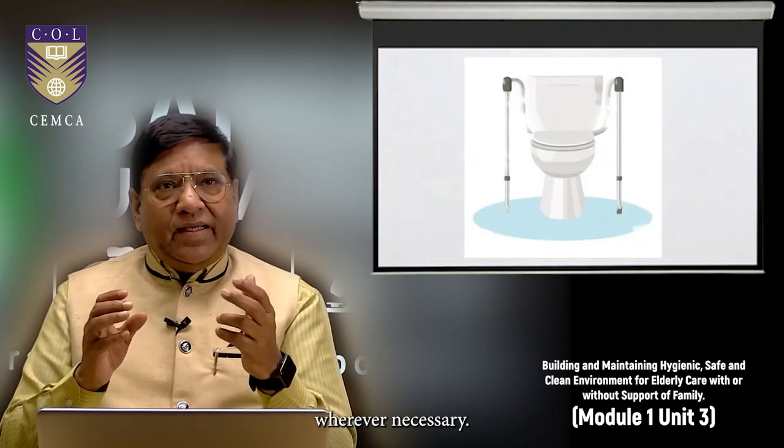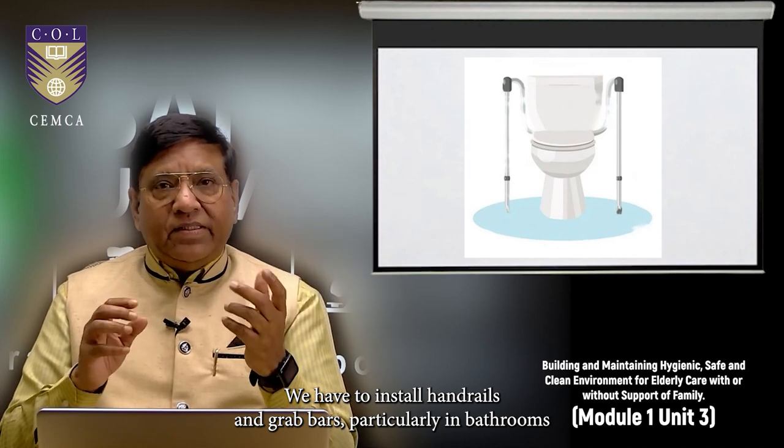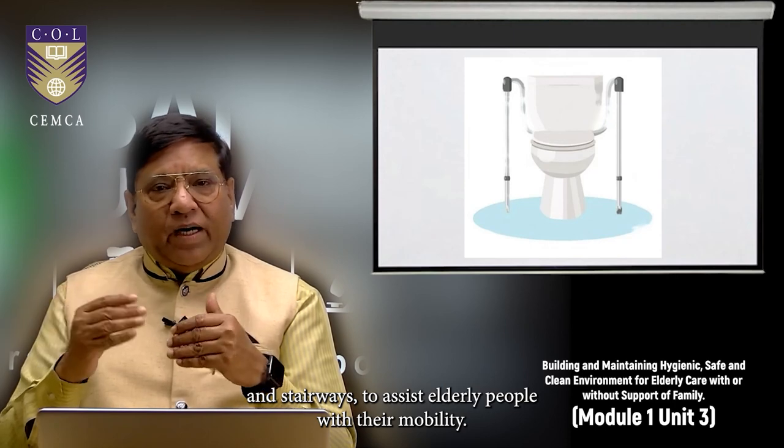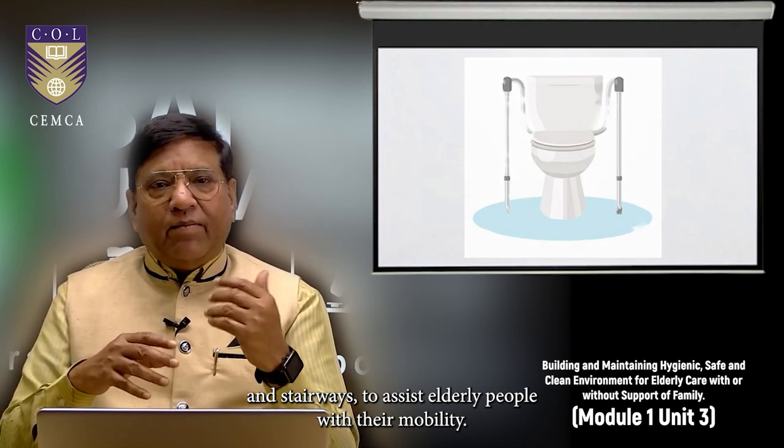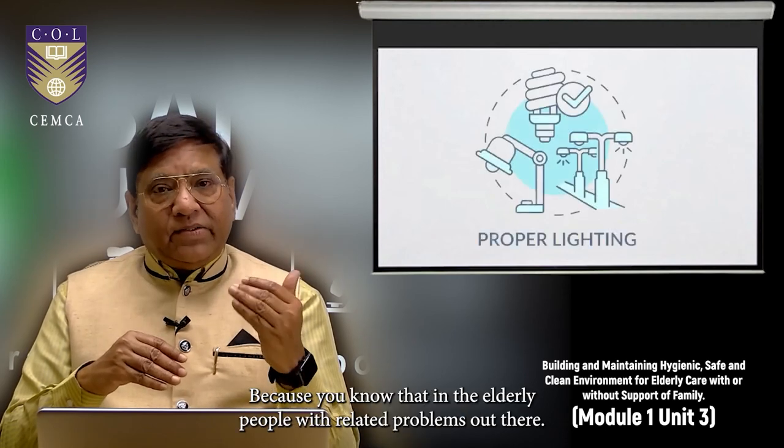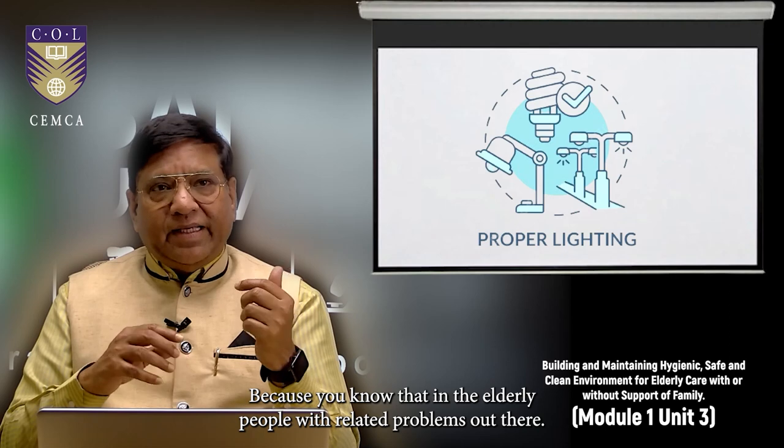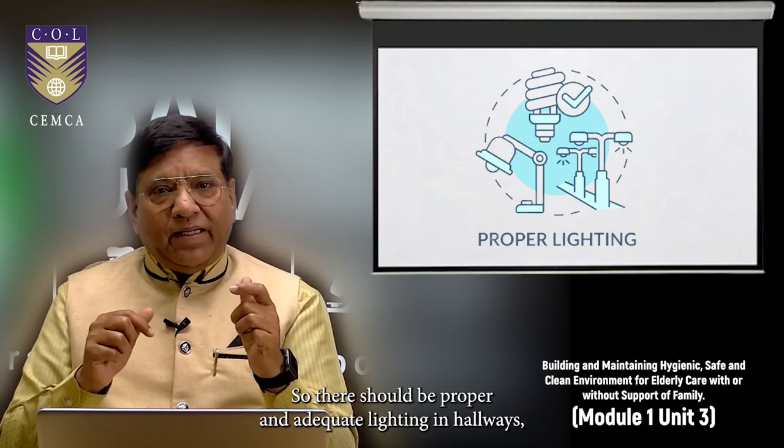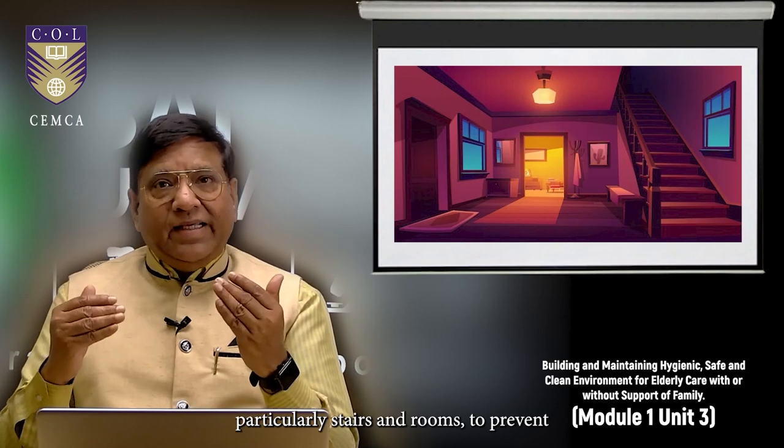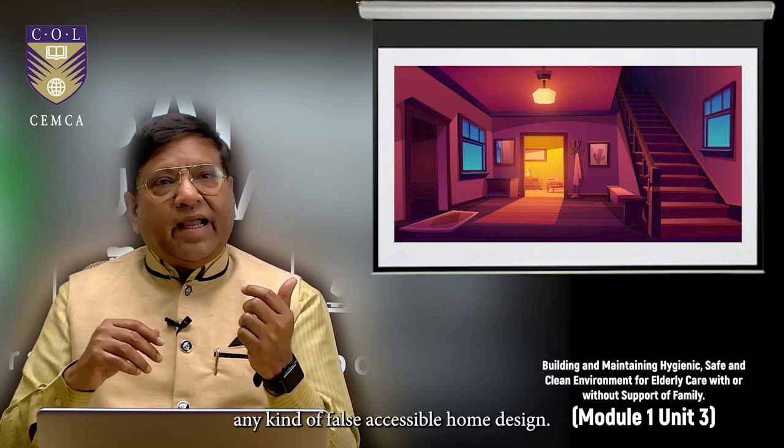Wherever necessary, we have to install handrails and grab bars, particularly in bathrooms and stairways to assist elderly people with their mobility. Proper lighting, because you know that in elderly people, vision related problems are there. So there should be proper and adequate lighting in hallways, particularly stairs and rooms to prevent any kind of falls.